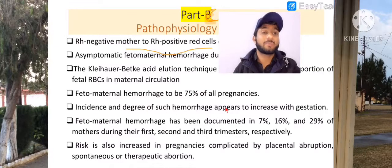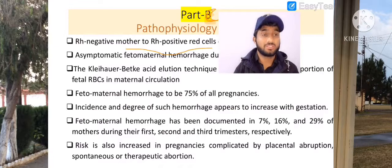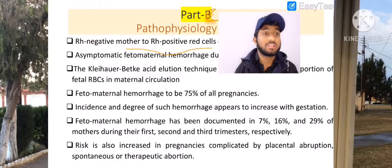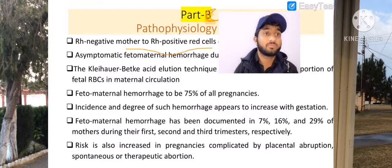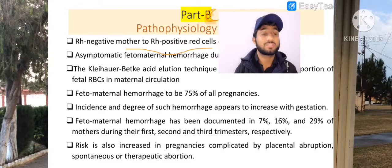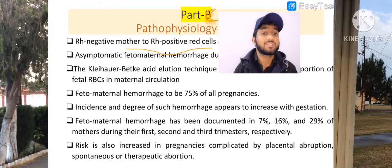The incidence and degree of such hemorrhages appear to increase with gestation. This is an important point — the gestation period is 40 weeks. If the gestation period is extended beyond 40 weeks, then the hemorrhage will also increase. When the hemorrhage increases, there will also be increased chances of HDN.